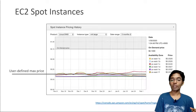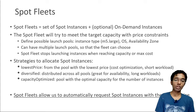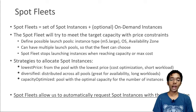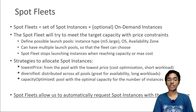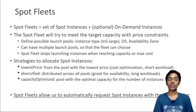A spot fleet is a little bit different. A spot fleet is a collection of spot instances and optionally on-demand instances. You set a maximum price you are willing to pay, and you can have a mix of instance types — for example, m4.large, m5.large, m5.xlarge, c5.2xlarge, and so on. You are more interested in the compute power than the specific instance type itself.